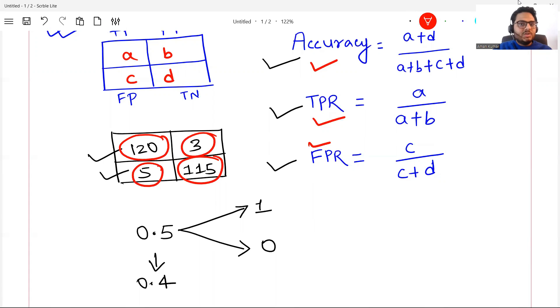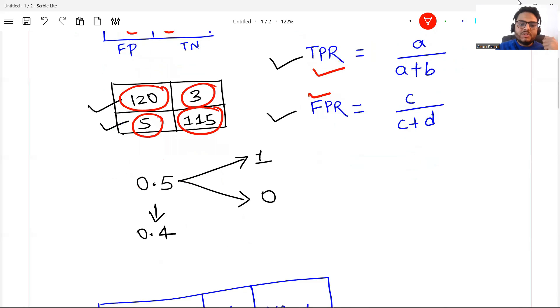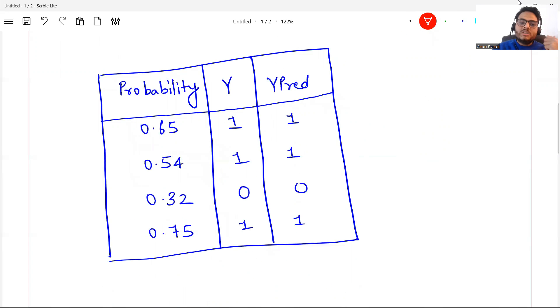If somebody asks you, give me one metric that can tell me how good your model is at any threshold. Your metric should not be depending on the threshold. Give me one metric that is independent of threshold. Let's try to understand with a simple example.